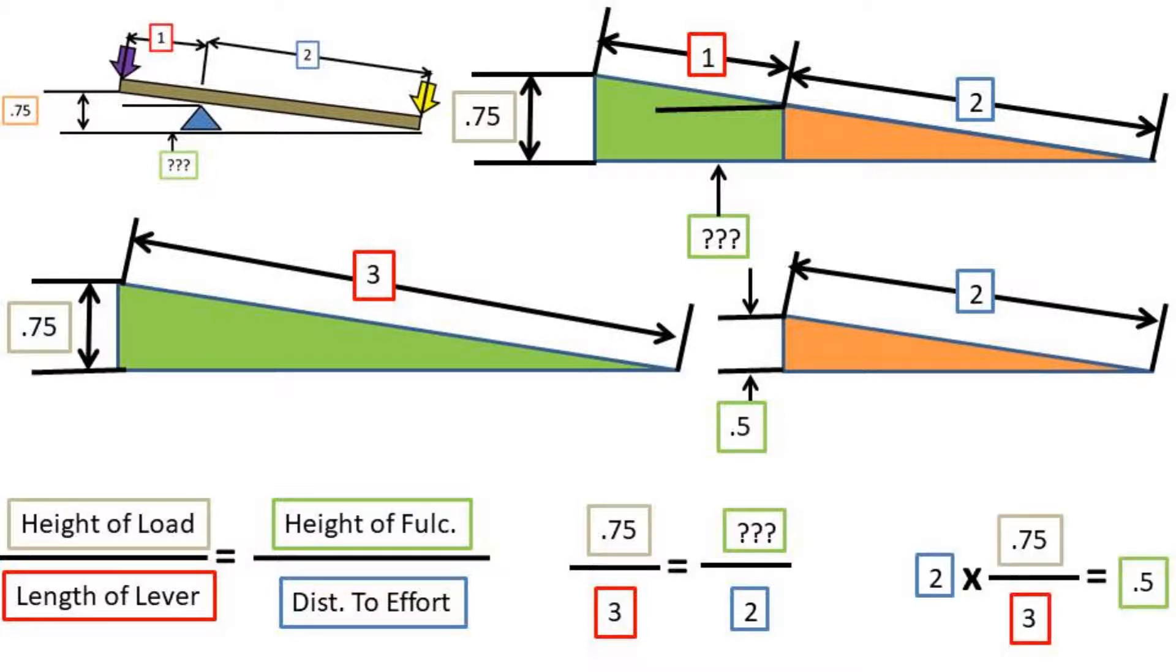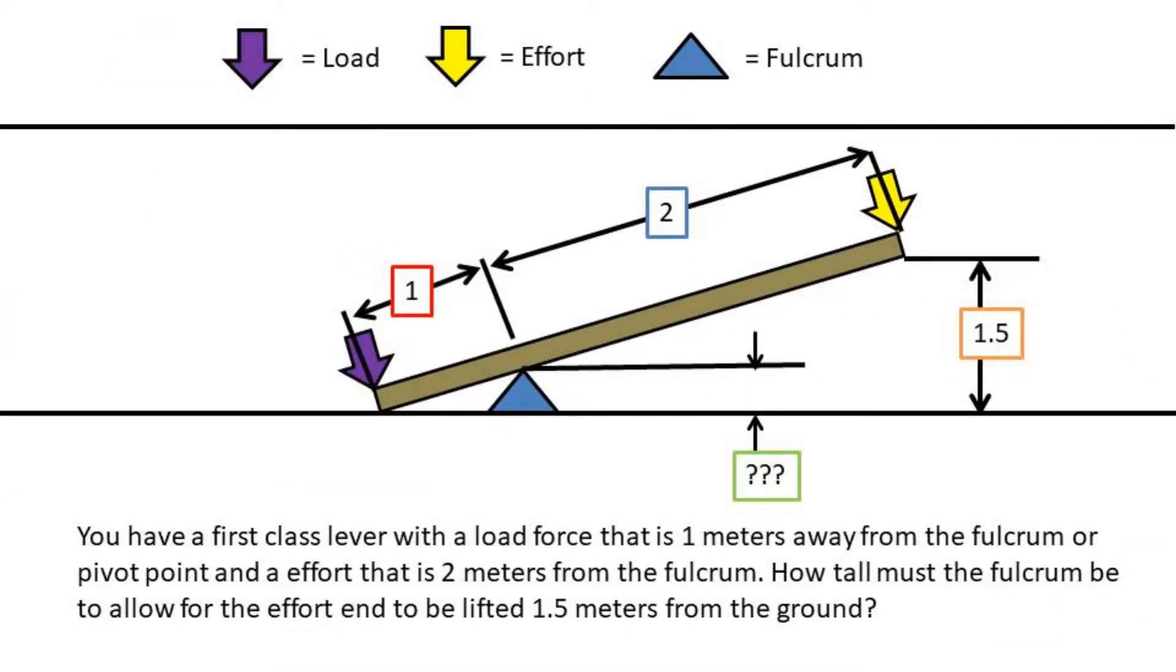After rearranging this formula we get 0.5 meters for the height of the fulcrum. Now let's do the same problem, but this time using the height at the effort end.